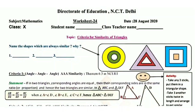Let's begin. Name the shapes which are similar always and why. You can see concentric circles — the center is the same but with different radii, so all circles look round and are similar. Next, equilateral triangles: all have each angle as 60 degrees, so they are always similar. Next, squares: each angle is 90 degrees and all sides are equal, so all squares are similar. So circles, equilateral triangles, and squares are always similar.